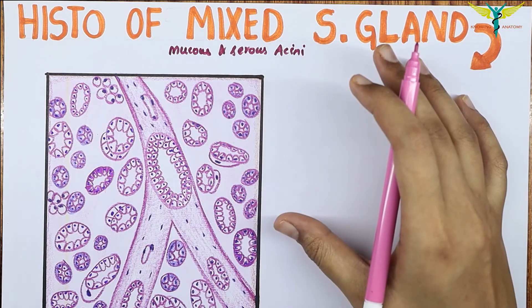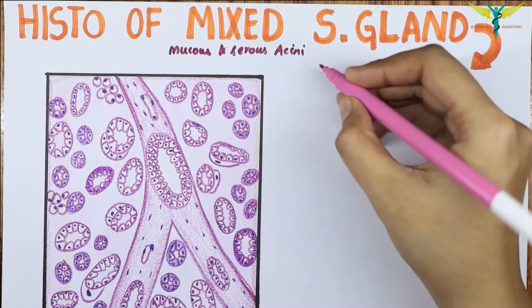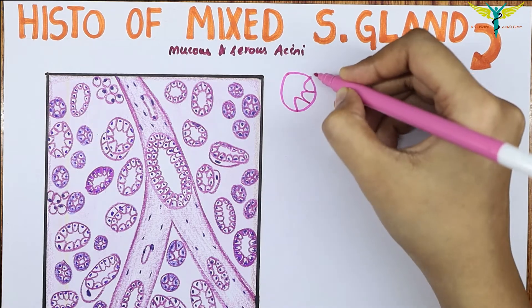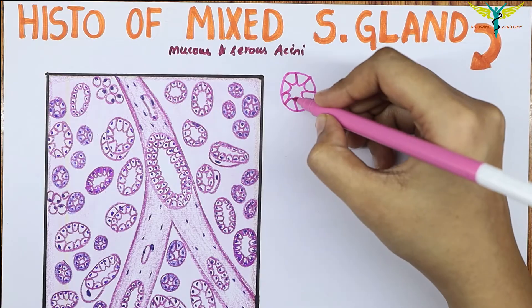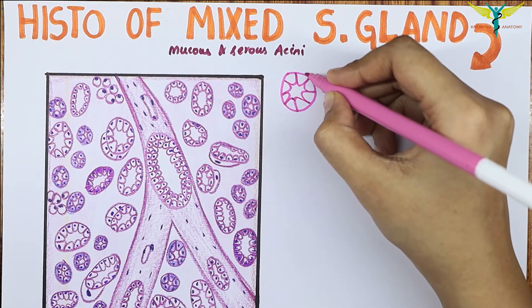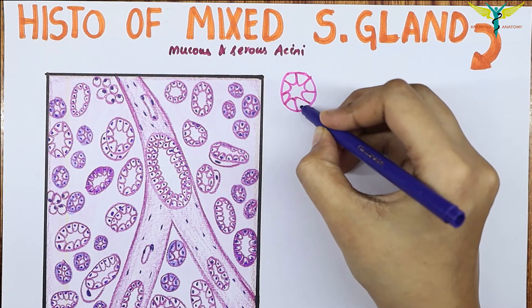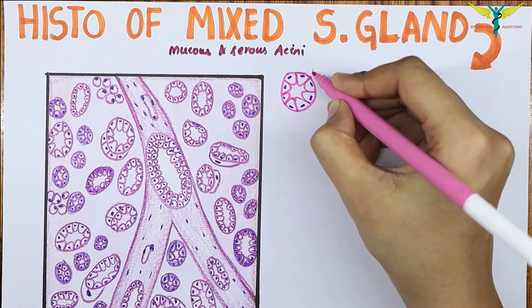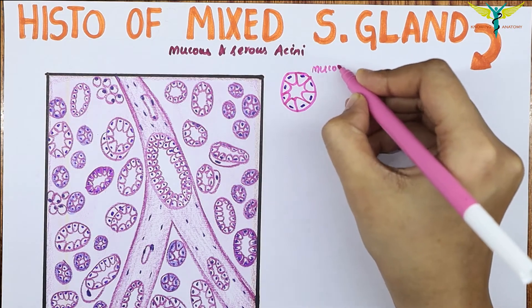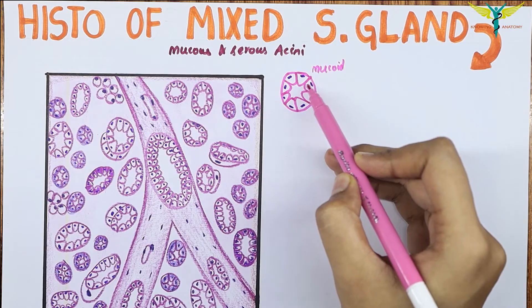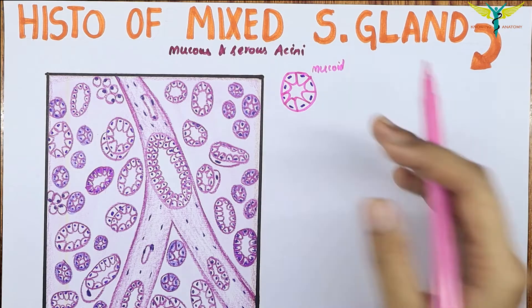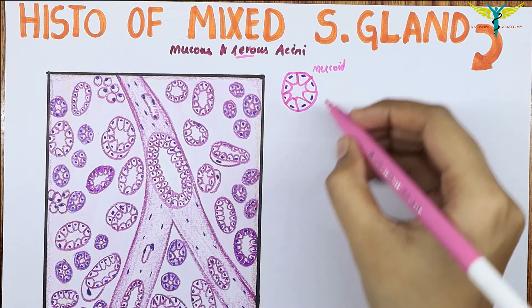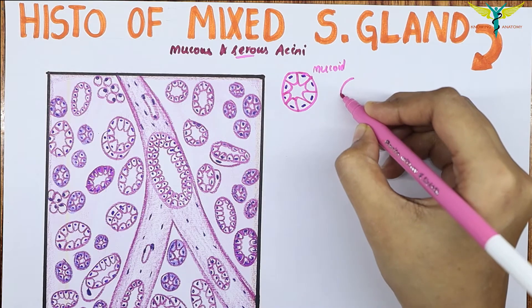The mucus acini are tall cells with a flat nucleus at the base, which have distinct cell boundaries, and they secrete thick mucoid secretion. These mucus acini contain mucoid material and they appear empty inside in the hematoxylin and eosin stain.